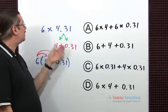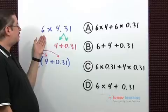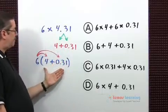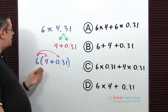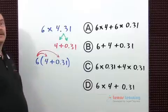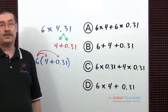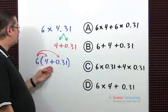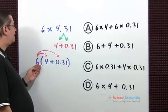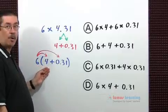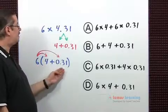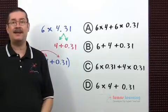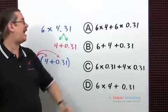Now I'm going to multiply this by 6. To do that, I'm going to place these in parentheses and then 6 on the outside. By the distributive property, I'm allowed to multiply each of these terms by 6: 6 times 4 plus 6 times 0.31, which is exactly what's being done in choice A.